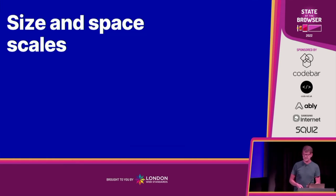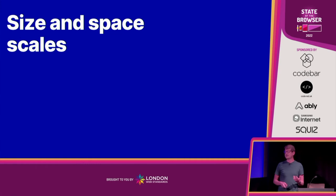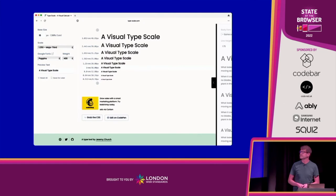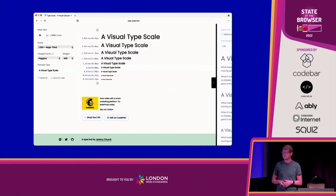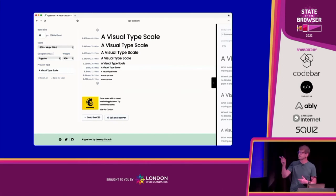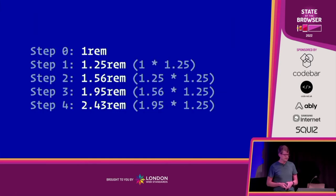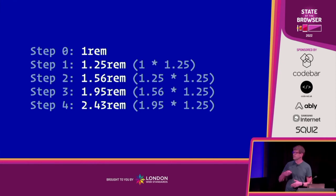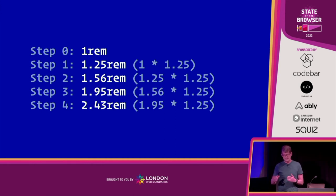We can build on this further — fluid type is great but what's even better is type scale. We've been using type scales in design forever, and they create a natural flowing rhythm on the page based on ratios. Every size up is multiplied by the ratio — in this case 1.250, which is called a major third. You start with 1rem, multiply by 1.25, get 1.25, and it exponentially rises into a nice type scale.